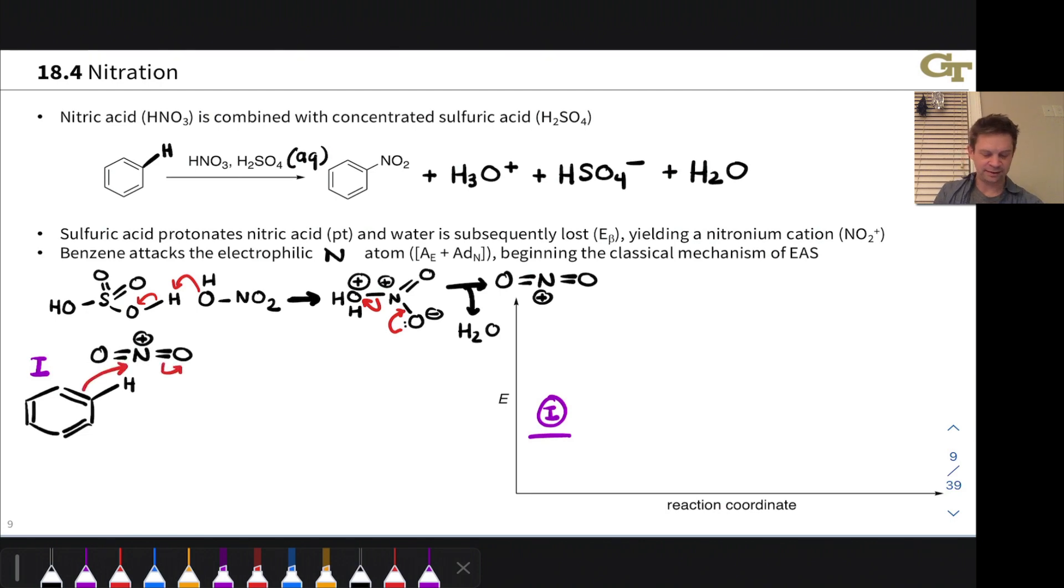And here we might think of this as A sub E from the perspective of the aromatic ring, but nucleophilic addition to the polarized NO pi bond from the nitronium cation's perspective. However you think about it, it is formation of a C-N bond at the aromatic ring.